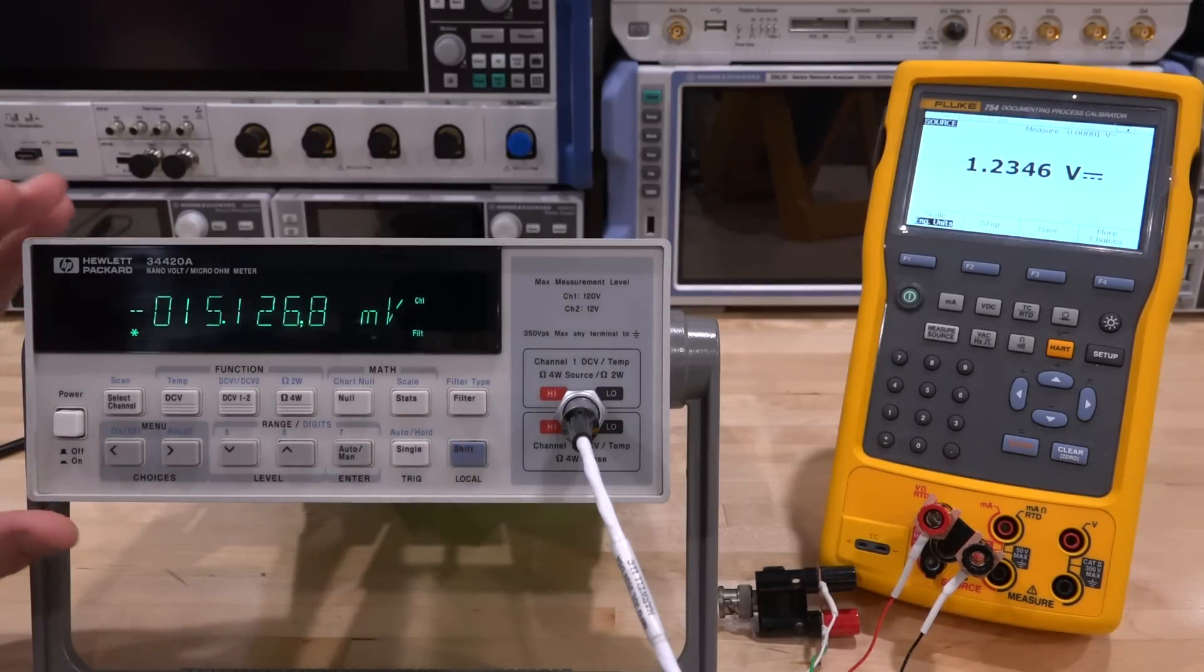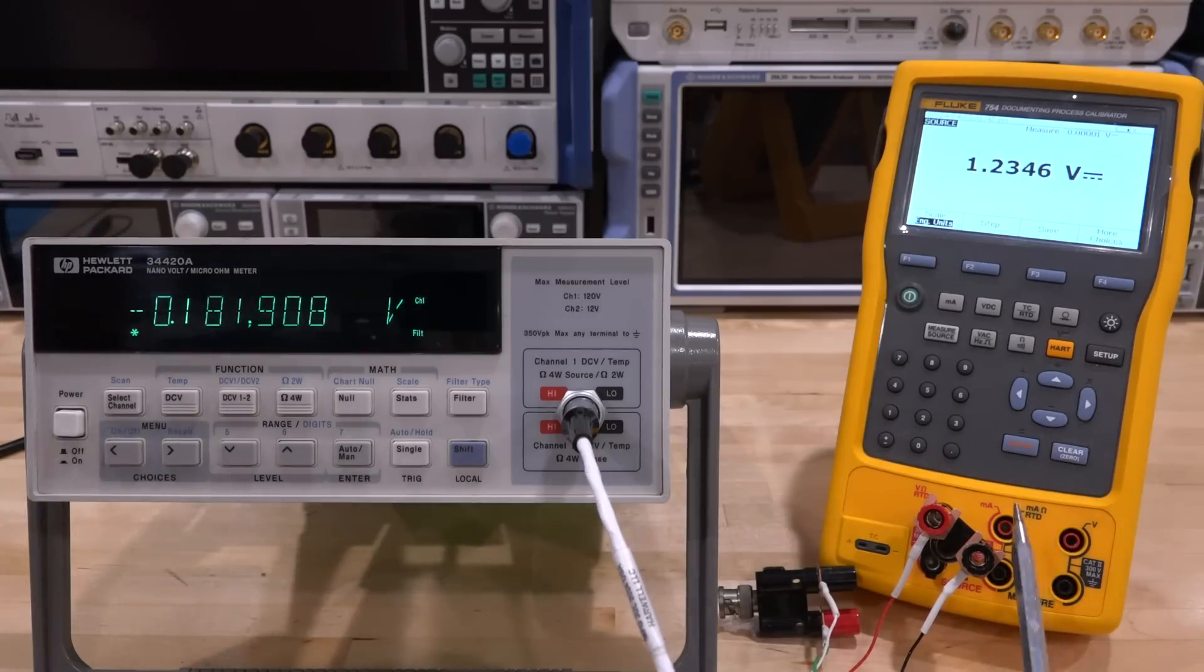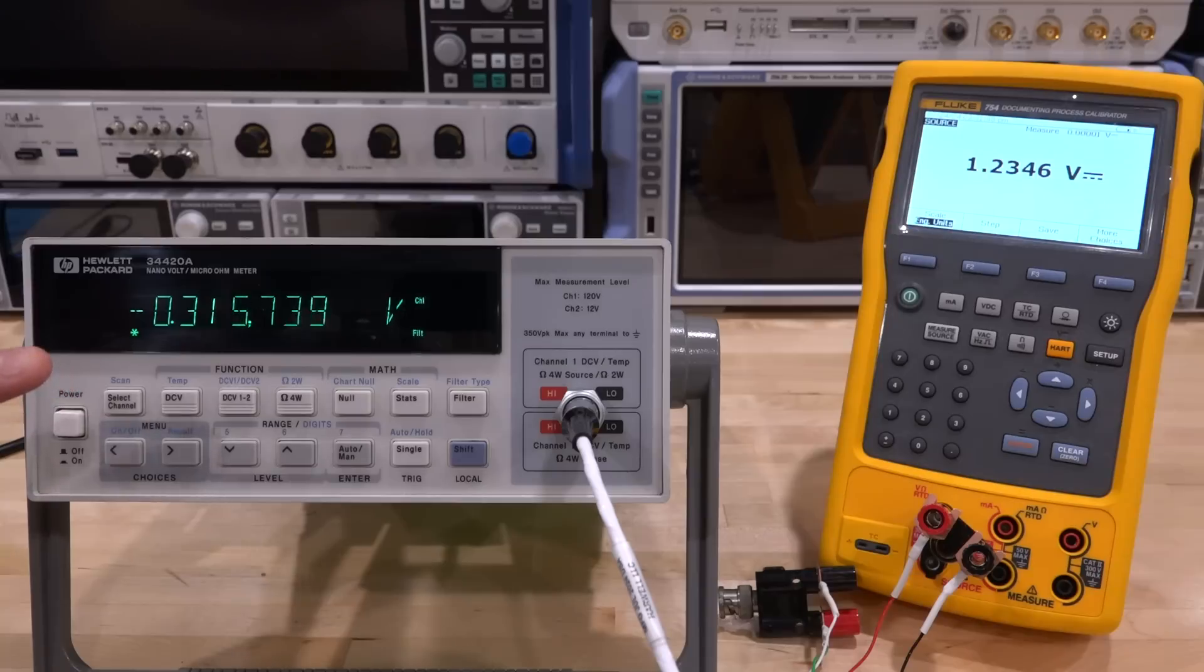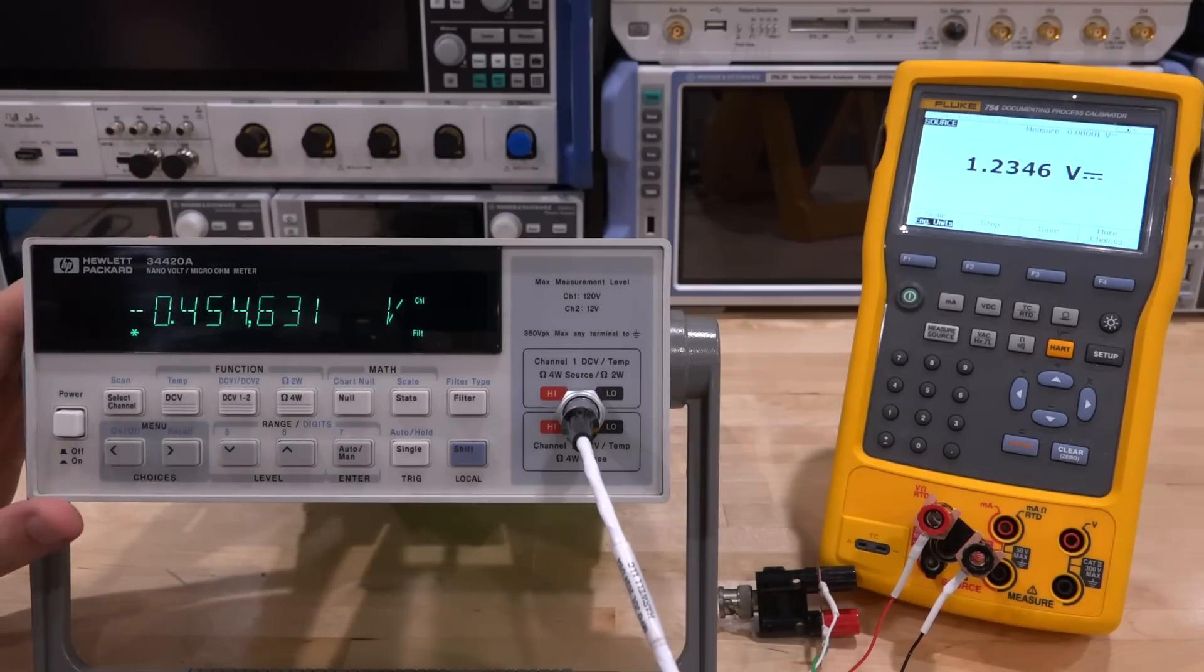Now the back end of all these instruments is the same. There's only one digitizer and one reference shared between the two channels, so it has to switch between them. Right now I have it set to channel 1, connected to the Fluke 754 documenting process calibrator. I'm applying 1.23456 volts but as you can see, I'm measuring nothing. Channel 1 is not responding at all, and that's what was wrong with it. I've always wanted one of these but they're quite expensive - this was almost $800 even when broken.